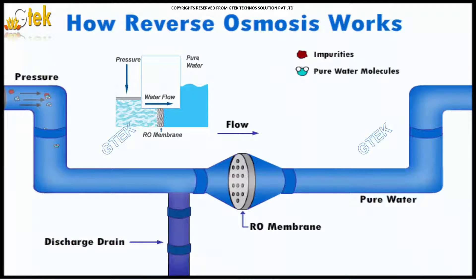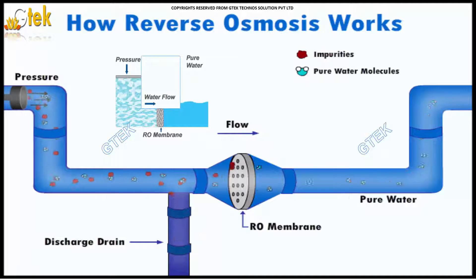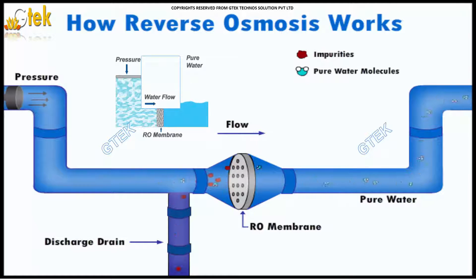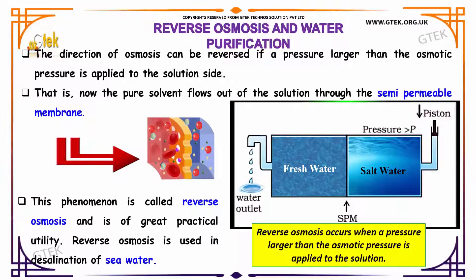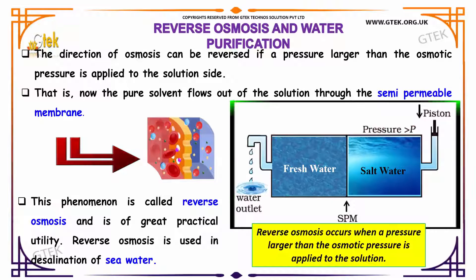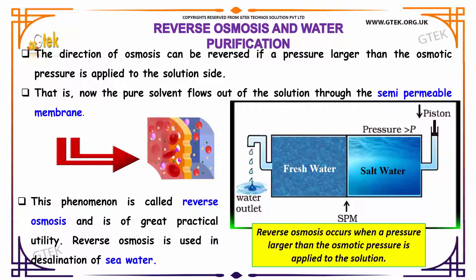Here is a 3D illustration of how water is purified. Water with impurities passes through a semipermeable membrane, and pure water is separated from impurities. This overall process is called reverse osmosis. The direction of osmosis can be reversed if a pressure larger than the osmotic pressure is applied to the solution side — now the pure solvent flows out of the solution through the semipermeable membrane. This phenomenon is called reverse osmosis and is of great practical utility. Reverse osmosis is used in desalination of salt water.